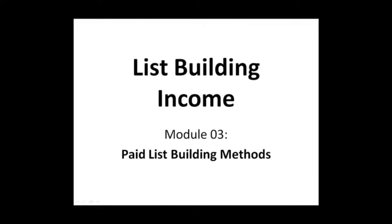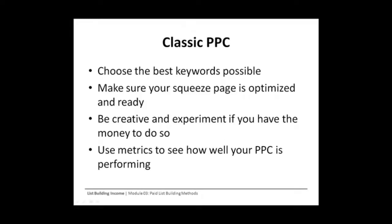In this module, we will cover the basic techniques and ideas behind paid list building. In the last module, we covered most of the accepted ways by which you can generate free traffic. However, if you have money, you can certainly purchase traffic to help build a subscribership to your list. We will cover the most popular ways to do this effectively so that your dollars are always spent wisely. PPC, or pay-per-click, is by far one of the most popular and effective ways to purchase traffic for your list. It's not always easy, and will take some trial and error in the beginning.